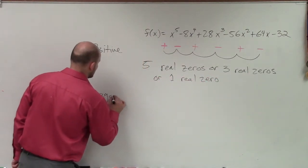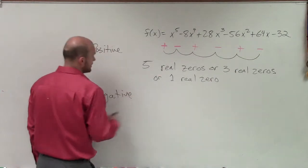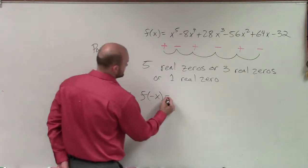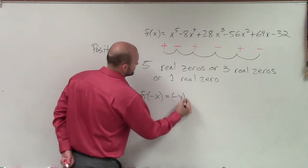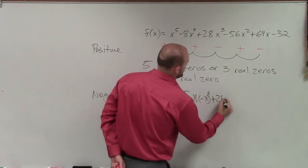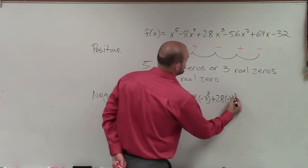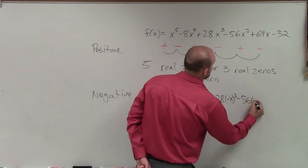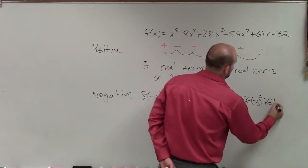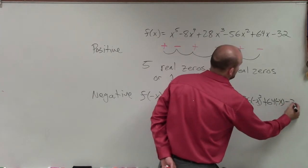Now, to determine the negative, I have to write out this whole polynomial again. So you have negative, because now you're going to apply an f of negative x. So therefore, you have negative x to the fifth minus 8 negative x to the fourth plus 28 times negative x cubed minus 56 times negative x squared plus 64 times negative x minus 32.